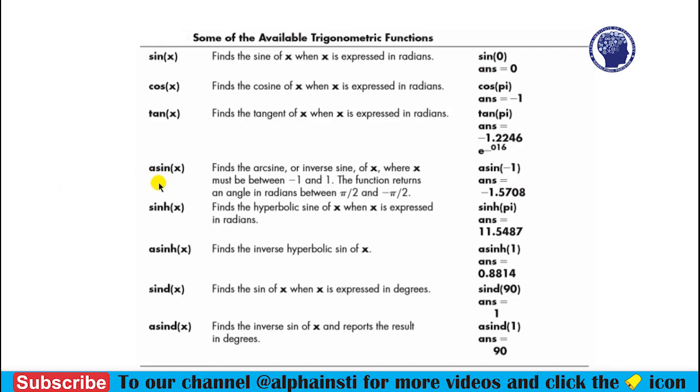And here we have got sinh, which is sine hyperbolic, similarly cosh hyperbolic and tanh hyperbolic. And asinh is the inverse of sine hyperbolic. So these are the common trigonometric functions that you can use and I hope you have understood this syntax of every function.